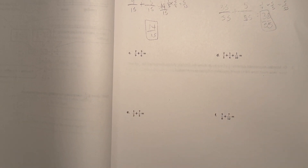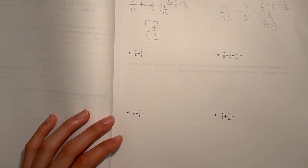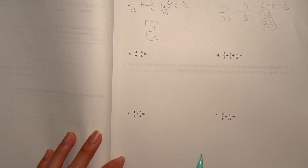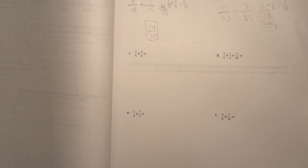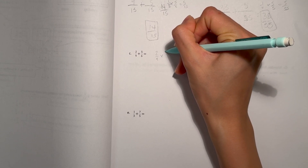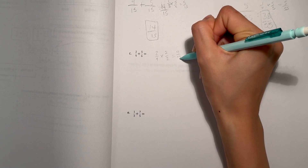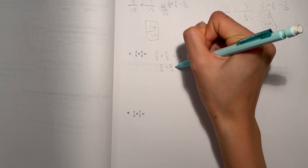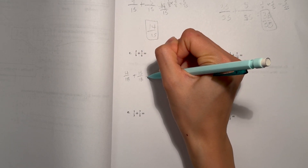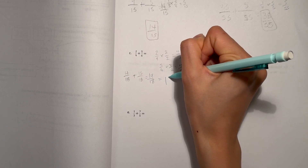Part c: two ninths plus five sixths. The least common multiple of nine and six — we have nine, eighteen. Eighteen works because six can go into eighteen too. It's really important that you know your multiplication facts so it's easier to find multiples. Two ninths times two equals four over eighteen, and five sixths times three equals fifteen over eighteen. Four over eighteen plus fifteen over eighteen equals nineteen over eighteen, or you can write it as one and one eighteenth.